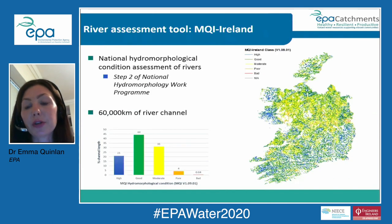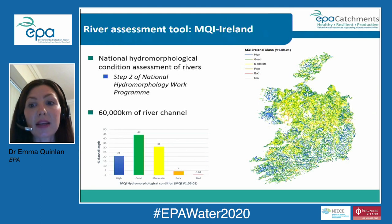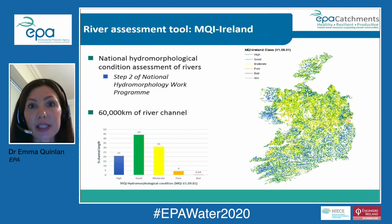As an example of a tool from steps two and three — developing and implementing hydromorphological condition assessment tools — we have the MQI Ireland tool for rivers. This is carried out at a national level, it's desk-based, and it provides a national overview of hydromorphological condition for rivers and allows for the targeting of areas for further investigation and mitigation.